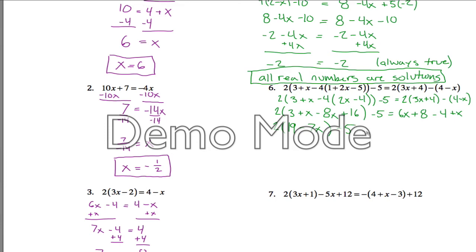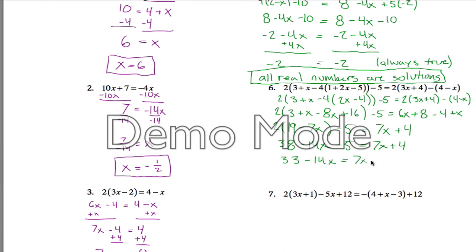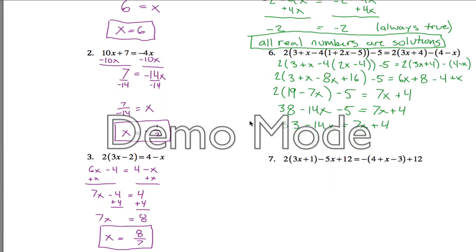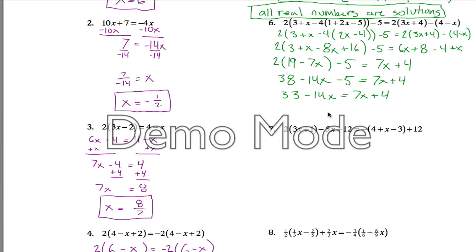And then I still have this negative 5 just hanging out out here. And then I got a 6x. On the left I can combine like terms: I have a 6x and an x, so I get 7x. And I got an 8 minus 4, which gives me a positive 4. Now I can distribute to get rid of the last set of parentheses: 2 times 19 is 38, and 2 times negative 7x is negative 14x. And then over on the right I have like terms again: 38 minus 5 is 33. Now I've gotten it to a spot where it looks like a problem like number 2. No more parentheses, no more like terms. So I'm going to start adding and subtracting things to both sides of the equation.